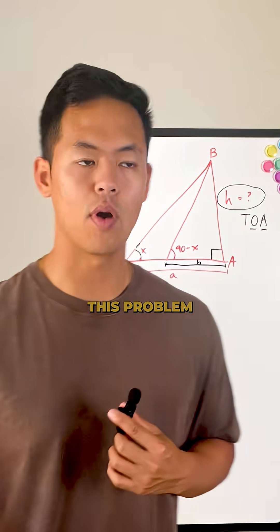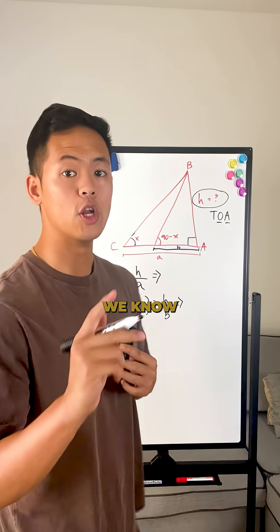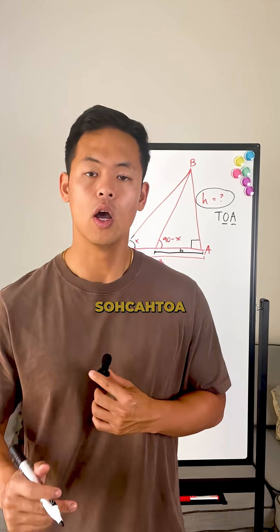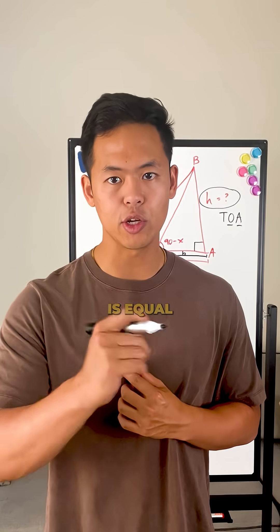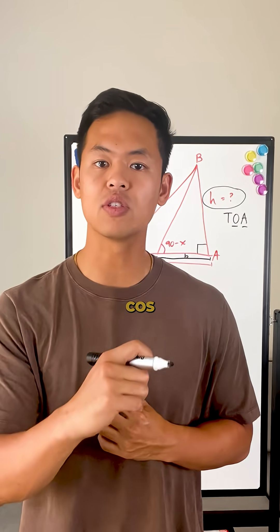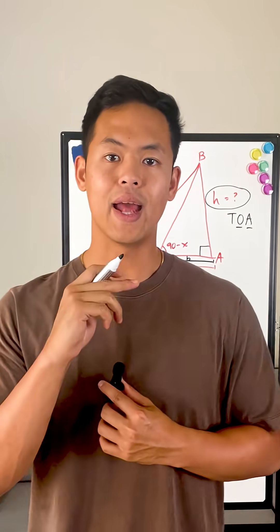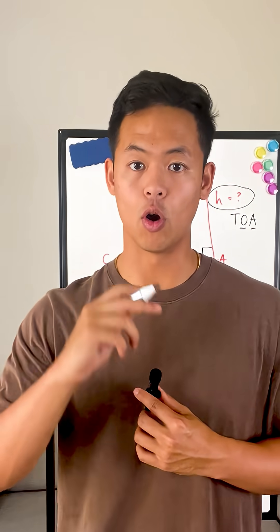Now, let's go ahead and solve this problem. Because we know we're working with the right triangle, we know we got to use SOH CAH TOA, which, if you don't know, is sine equals opposite over hypotenuse, cosine equals adjacent over hypotenuse, and tangent equals opposite over adjacent.